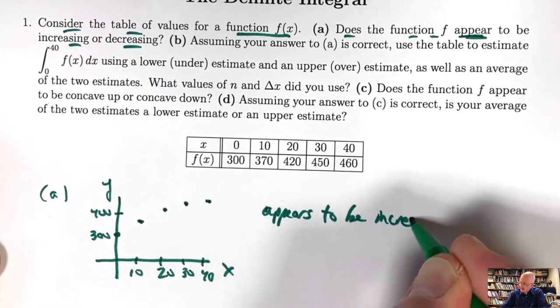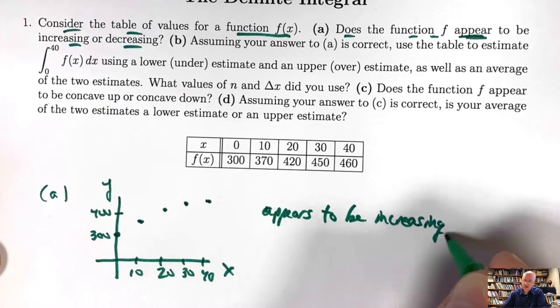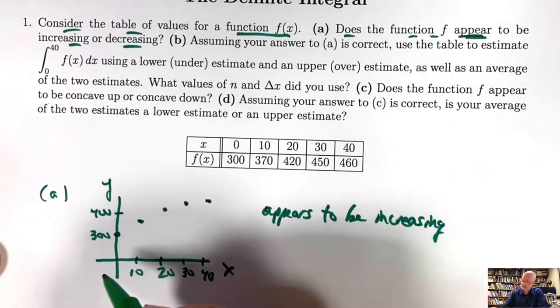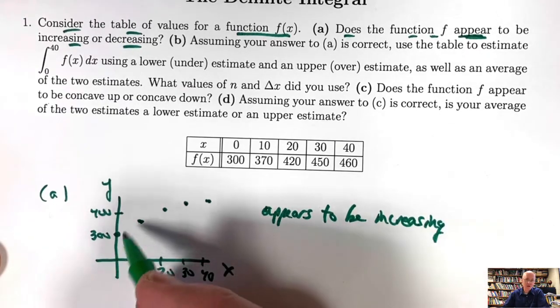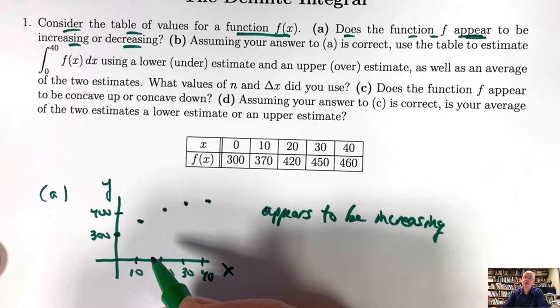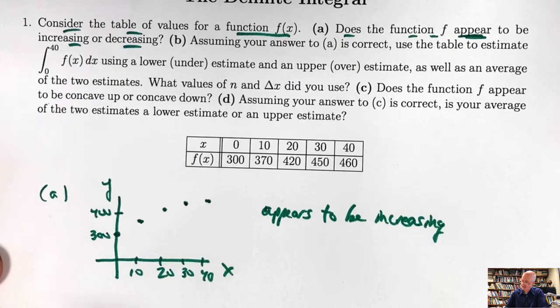However, again, that is just an appearance. Looks could be deceiving. The function could be oscillating in between these data points. You'd have to know by the application whether it's really an increasing function or not.